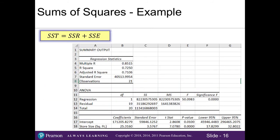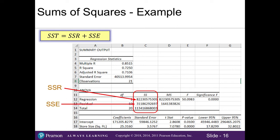Looking at our regression analysis for problem 25, SST, SSR, and SSE appear in the ANOVA table — the second table in our output — in the SS column. The row labeled 'Regression' is our sum of squares regression (SSR). The row labeled 'Residual' — remember, residual means errors — is our sum of squared errors (SSE). And 'Total' is our total sum of squares (SST). When I add my sum of squares regression and my sum of squared errors, I get my total sum of squares.